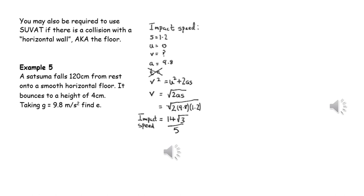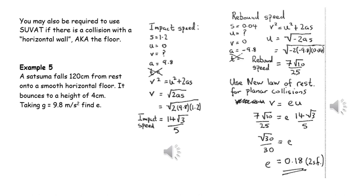We can find the speed that the object hits the floor with by just applying SUVAT equations with the fact that the acceleration is positive G.